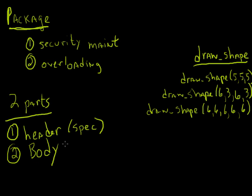By separating things like this, I have the ability to define public or private procedures and functions that are part of the package. Anything that's public can be called by anybody who has execute privileges on the package, but I can also have pieces of code that are unique to the package itself — private pieces of code that support the other procedures and functions but can't be called directly. I can also define variables, types, and cursors inside the package that are scoped uniquely to the package and don't affect any external code calling into it.